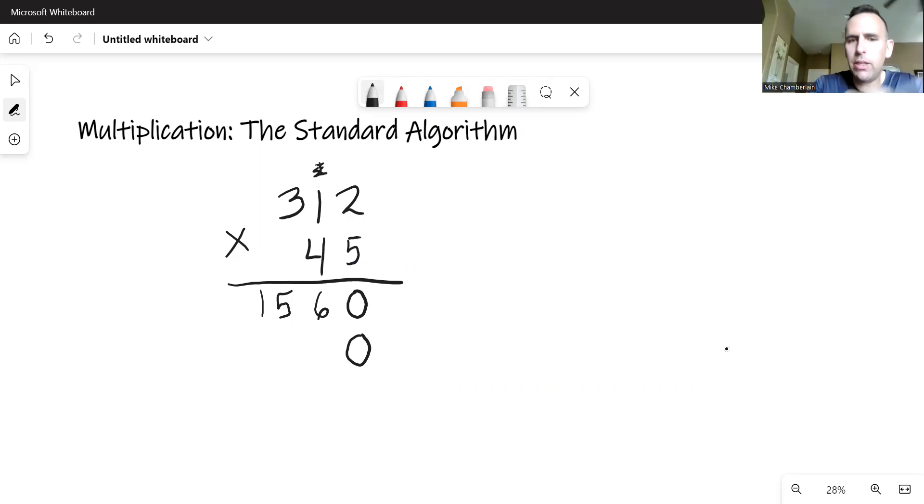So now we can start in the place value of 10. We do four times two first, that's eight. And then we have four times one, that's going to be four. And then four times three, that's going to give us a 12.